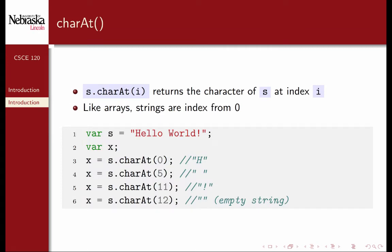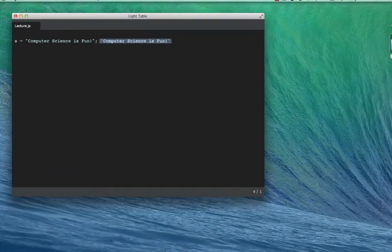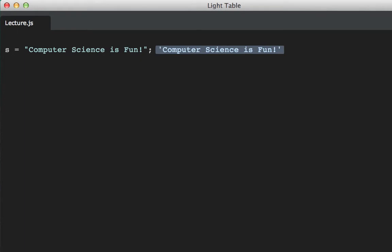Another useful function when processing strings is charAt. This returns the single character at a particular index in a string s. Like arrays, strings are indexed starting from 0. So the first character is at 0, and the last character is the length of the string minus 1. Let's take a look at some of these examples. Here I've got a string s which contains the string computer science is fun. s.charAt(0) will return a capital C because that's the first character. s.charAt(1), the second character is a lowercase o.